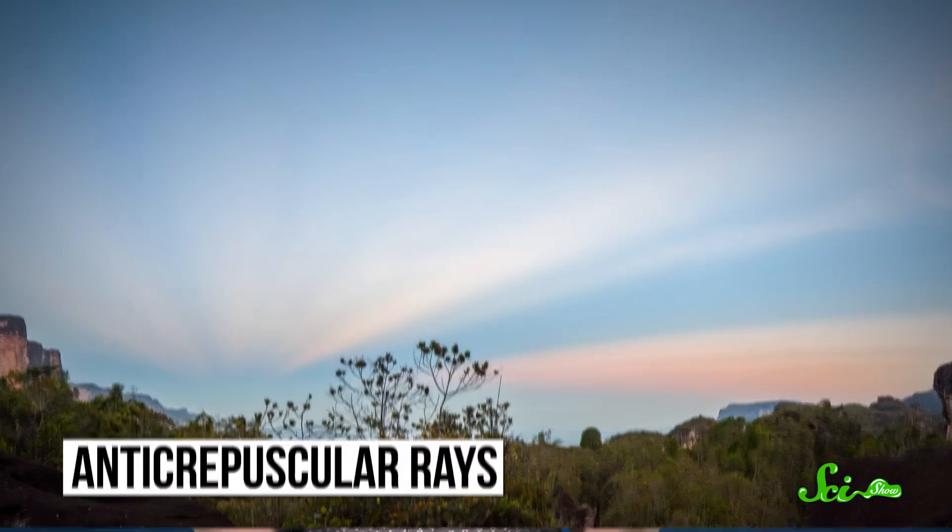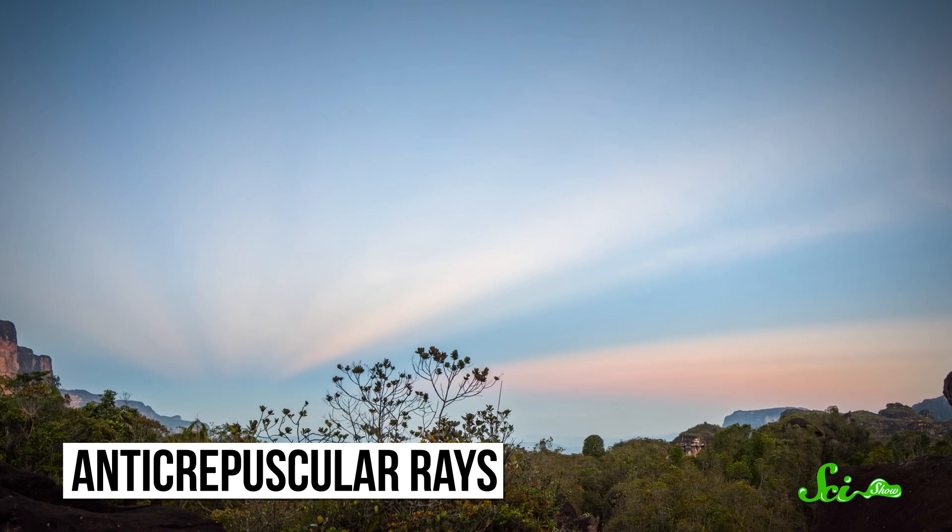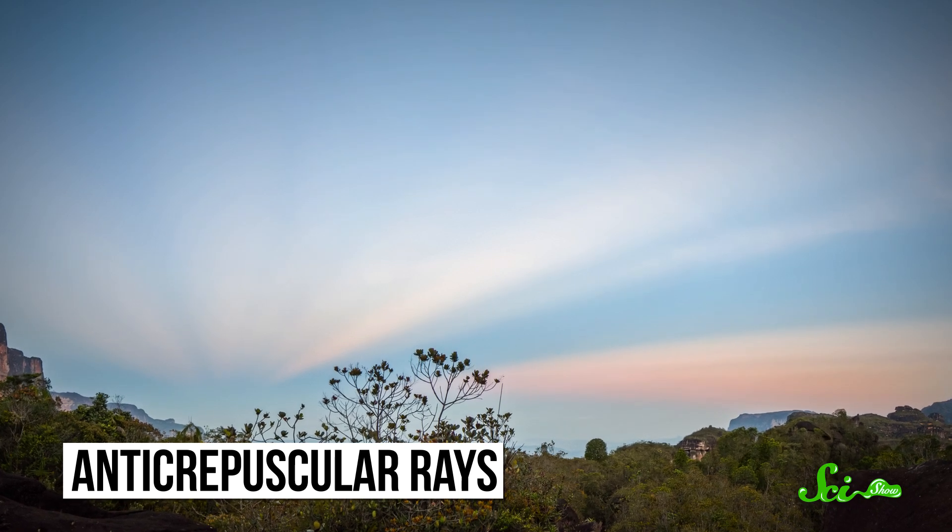Like all crepuscular rays, they look like they're radiating out from the sun, like a bunch of lines coming from a single point. But the ones right above you will look parallel. And the rays going behind you, directly opposite where the sun is, all meet again, where they are called anti-crepuscular rays. And they look like they're radiating out from some invisible sun on the darker side of the horizon.